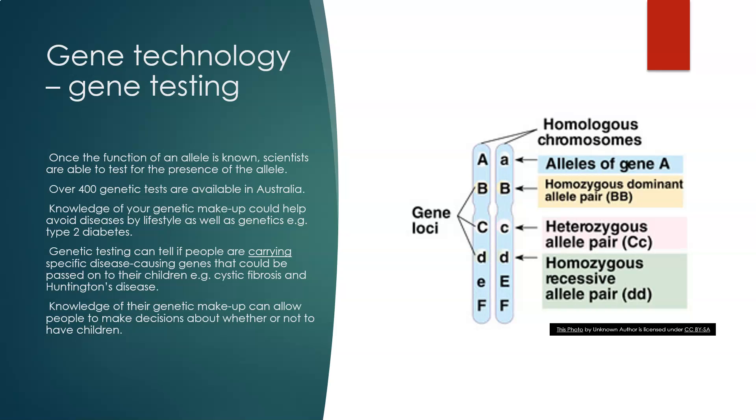Knowledge of your genetic makeup can allow people to make decisions about whether or not to have children. For example, if you're going to pass on a genetic condition, you've got the ability to make that choice as to whether you want to have children or not.